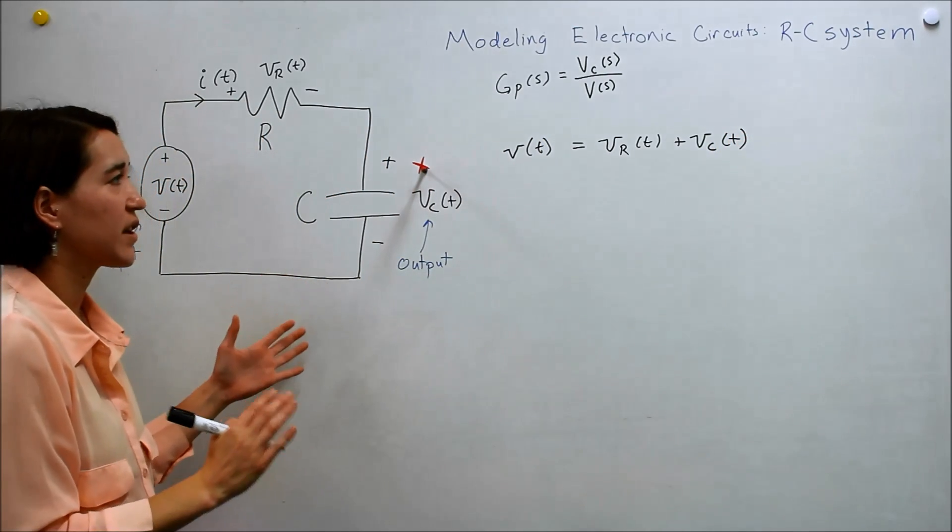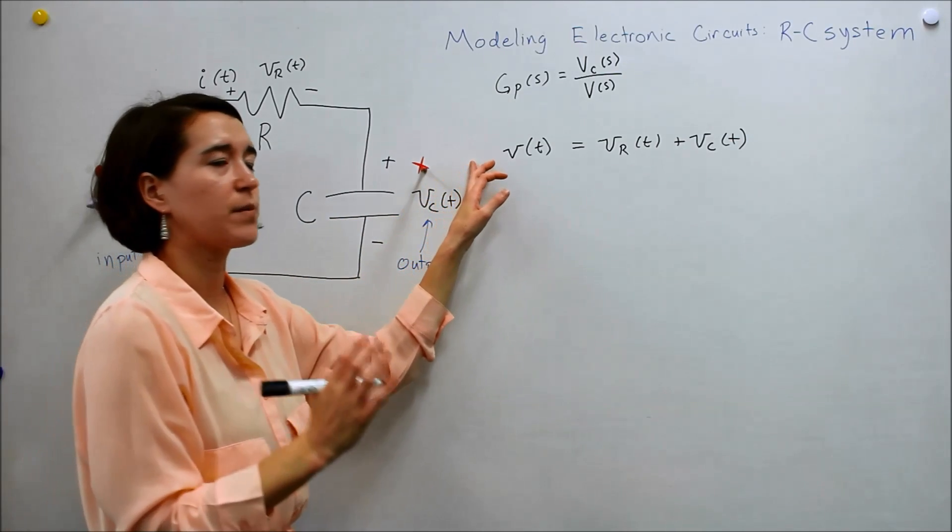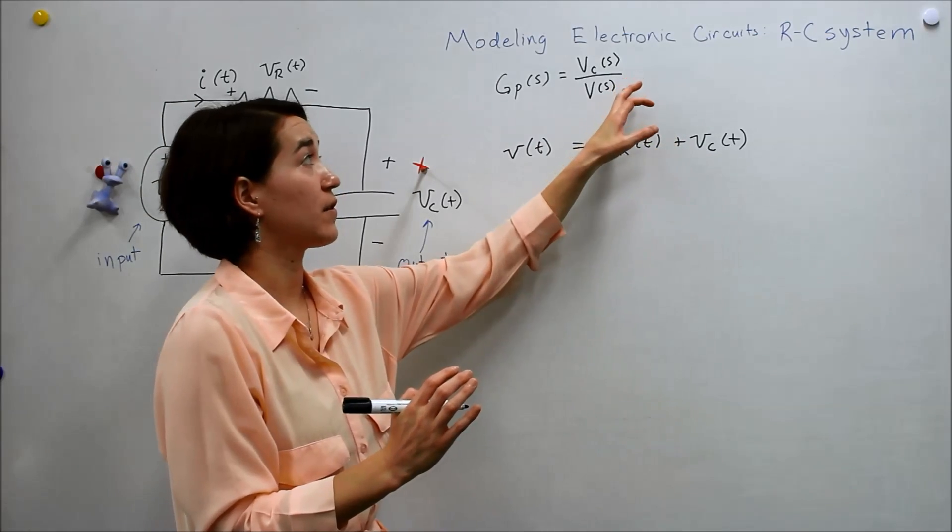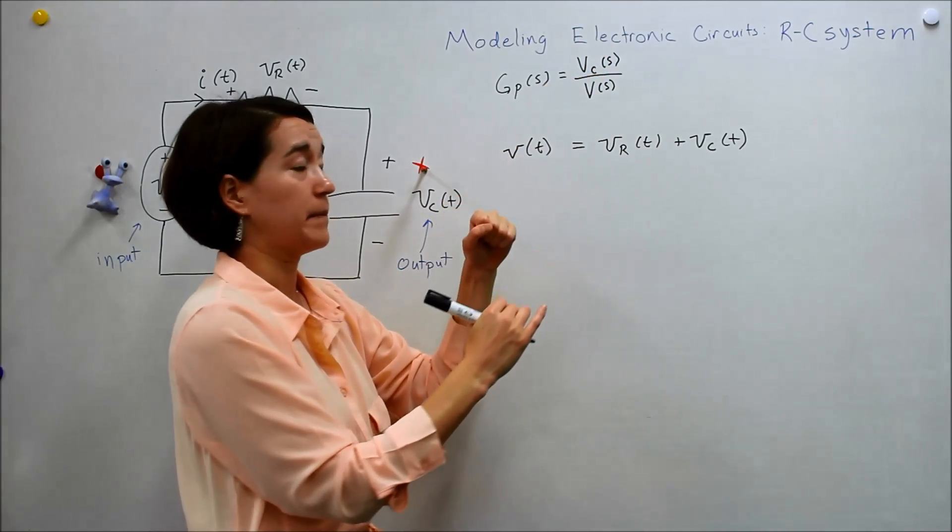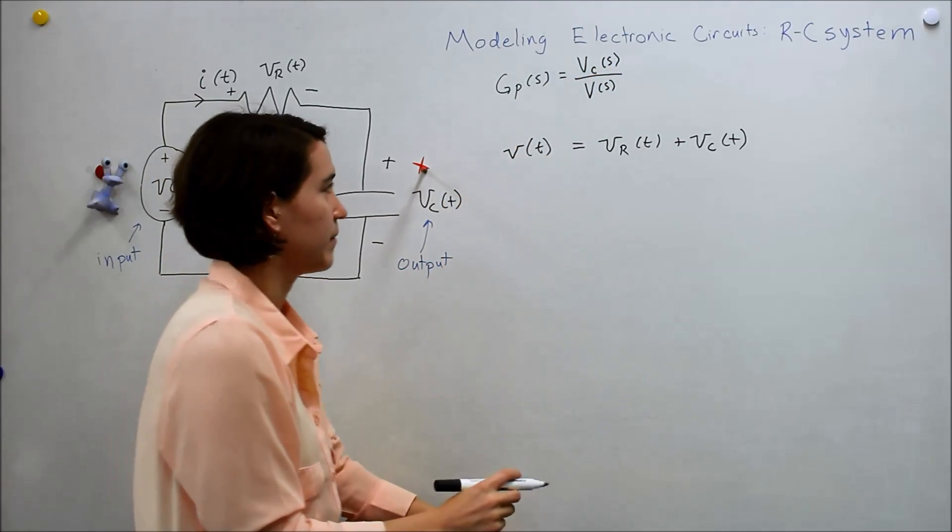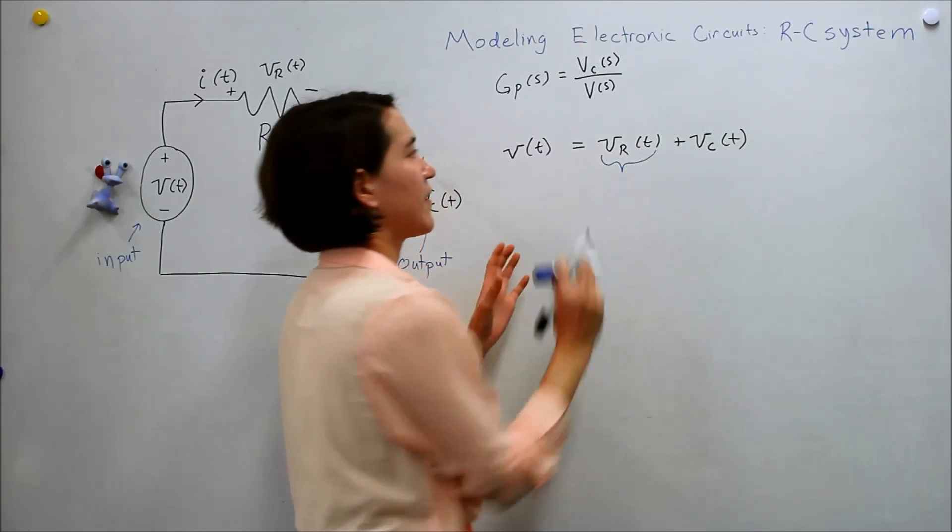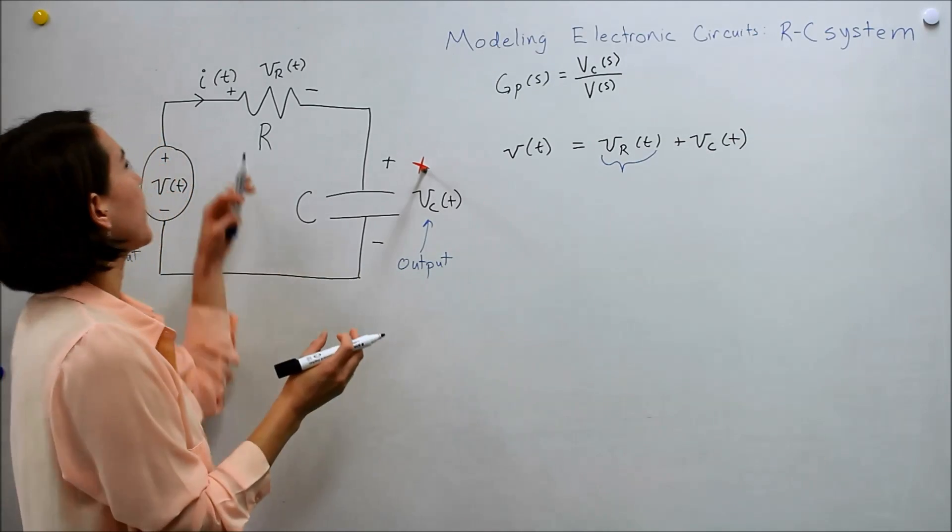And what we're really looking for is this expression in terms of just v and vc. So we really want to find these variables, so we need to make an equation using just those variables. And then we can isolate them. So the problem is this thing right here. vr is not in terms of v or vc. So, well, what else is vr equal to?